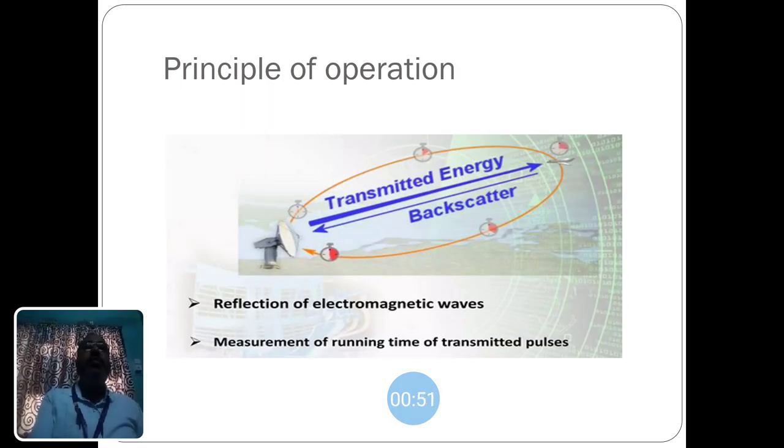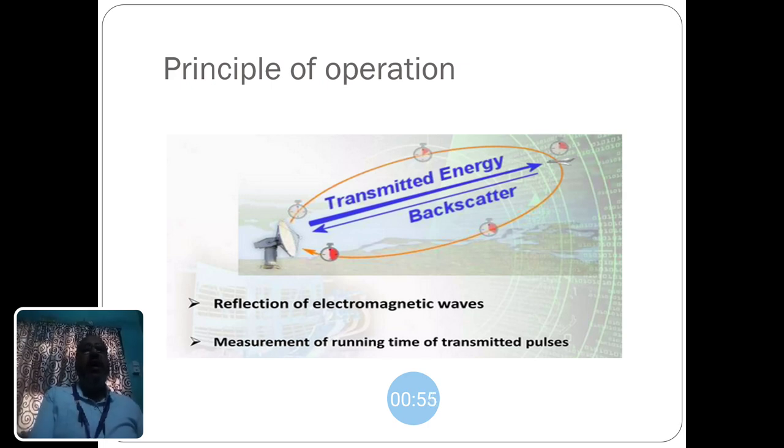Let us see the principle of operation. The radar sends the radar waves through the transmitter and it is reflected back when the source is objected. The measurement of running time of the transmitted pulses are measured.